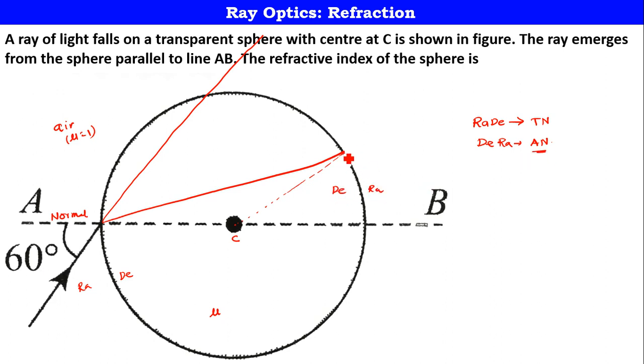So, it is supposed to go straight like this, but it should bend away from normal. And he also has given you in the question that it has to go parallel to the line AB. Now, you apply Snell's law here. What is this angle of refraction? If I apply Snell's law here at this location, what will I get? Mu 1 sine angle of incidence is equal to mu 2 sine angle of refraction. That is the Snell's law.